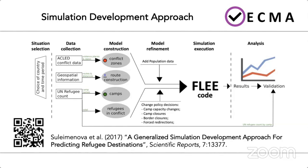To start, we select a country and time period of a specific conflict which results in large-scale forced displacement. Second, we obtain relevant data from three data sources: the Armed Conflict Location Event Data Project, the UNHCR data, and mapping platforms such as Bing Maps or OpenStreetMaps. We then construct our initial model using these datasets and create, among other things, a network-based, agent-based model.